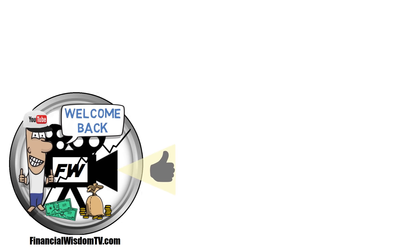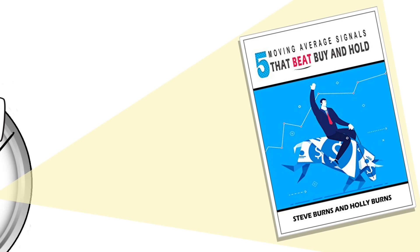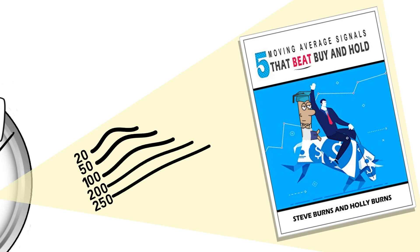Today we look at the book 5 Moving Average Signals That Beat Buy and Hold. We take a ride through the research and back-tested results, using the 20, 50, 100, 200 and 250 day moving averages, including crossover combinations.